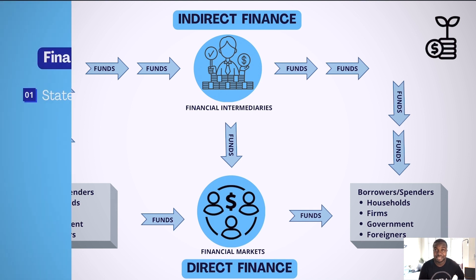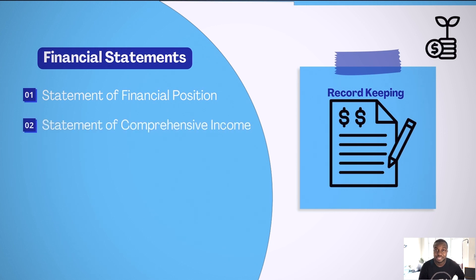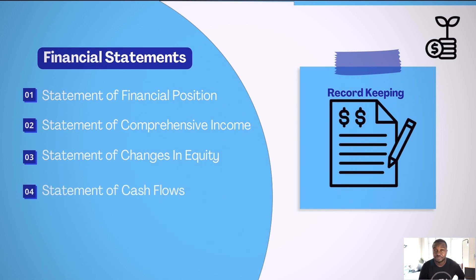namely the statement of financial position, also known as the balance sheet; the statement of comprehensive income, also known as the income statement; the statement of cash flows; and the statement of changes in equity.